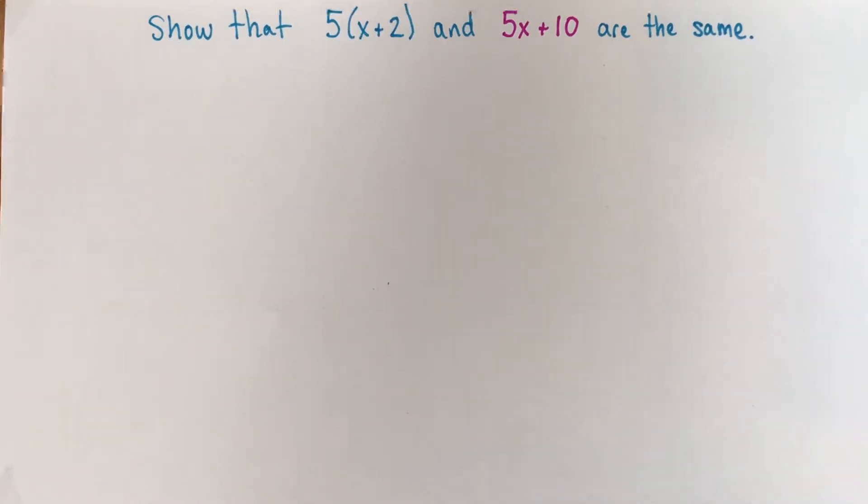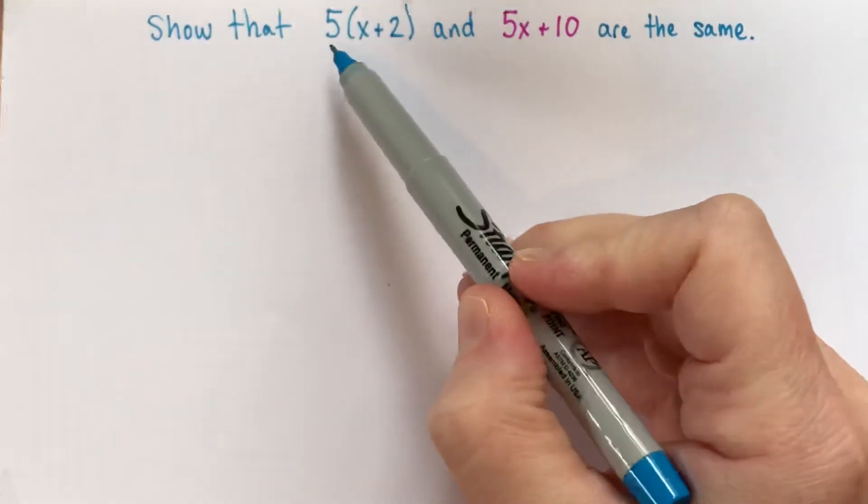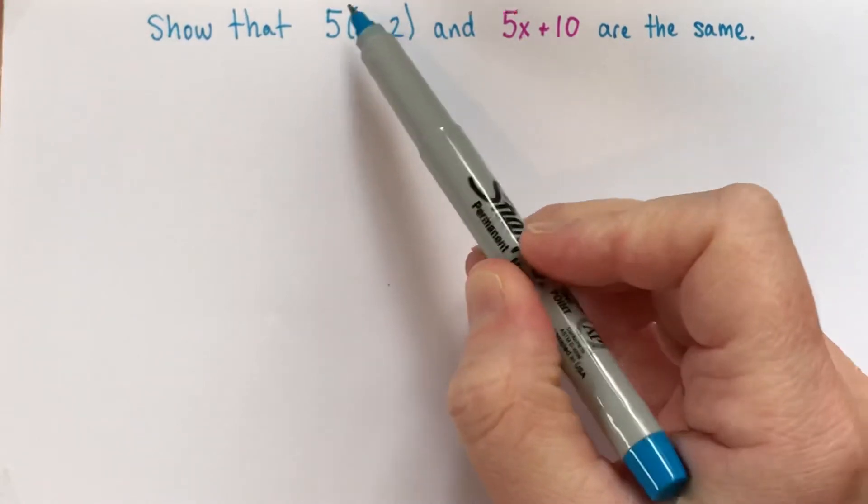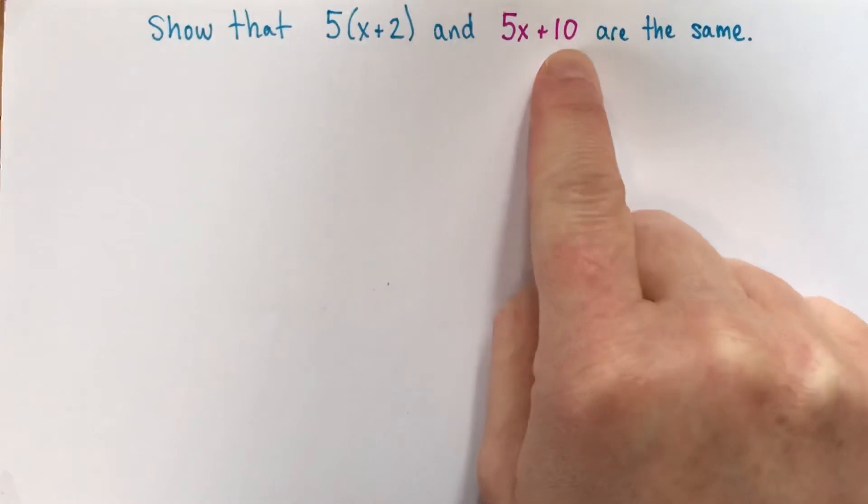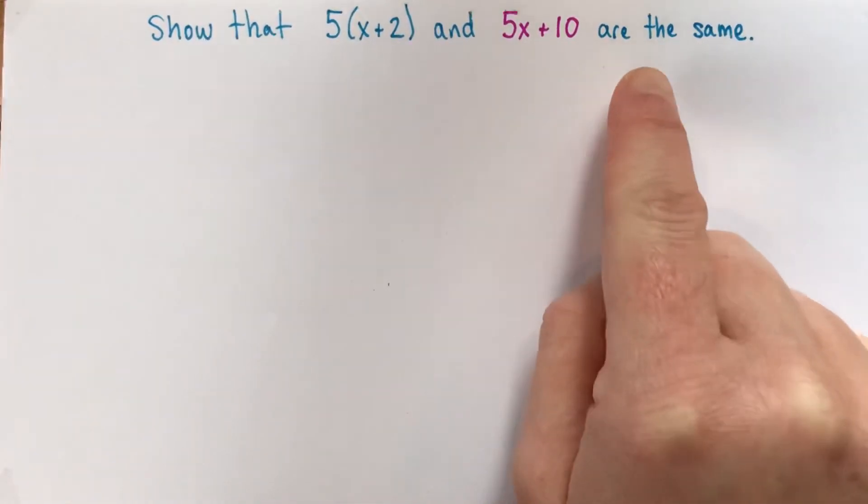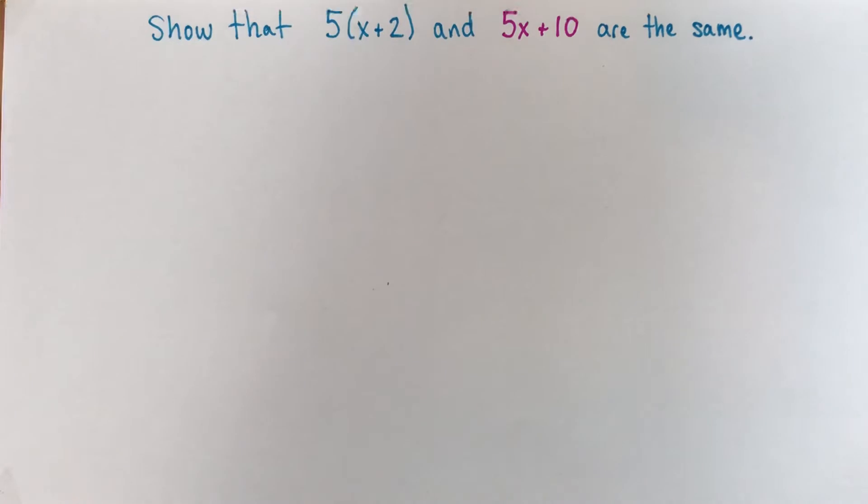Hi. In this video, I'm going to use algebra tiles to show that 5 times x plus 2, which is my blue expression, and 5x plus 10, which is my pink expression, are actually exactly the same thing. They mean exactly the same amount.